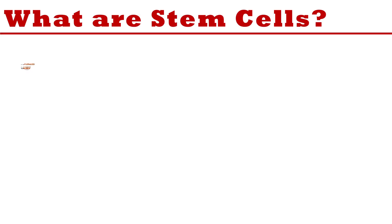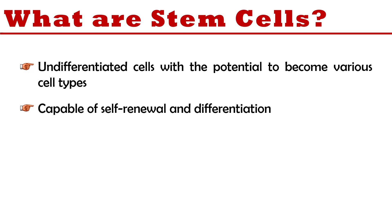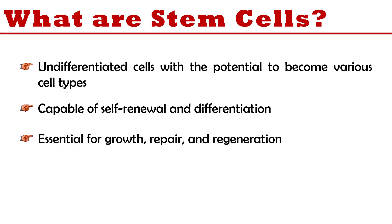So first, what are stem cells? Stem cells are undifferentiated cells, but they have the power to change into various types of cells. They are capable of self-renewal, meaning they can maintain their population by self-dividing. They can also differentiate into any kind of cell, and they are very much essential for the growth, repair, and regeneration of an individual.